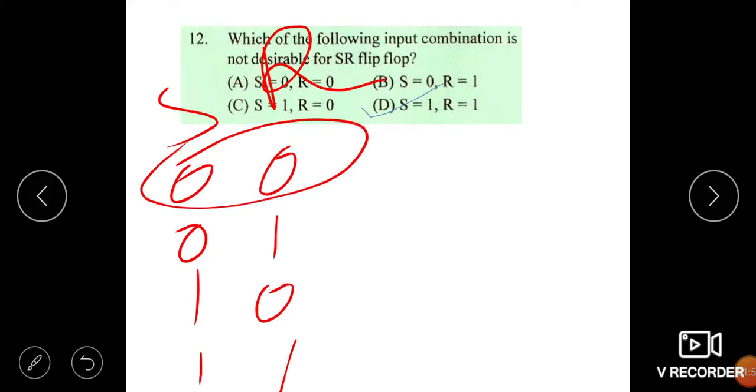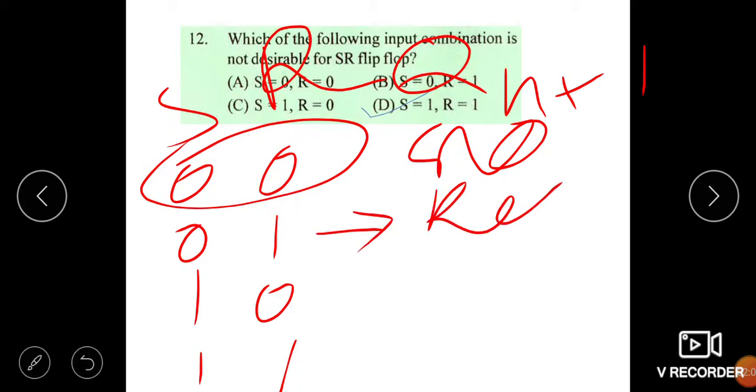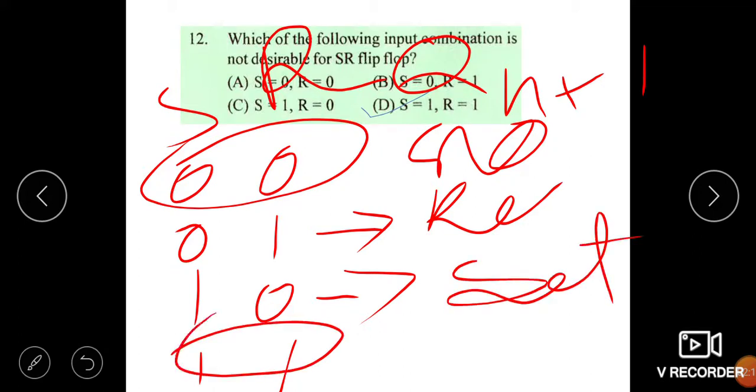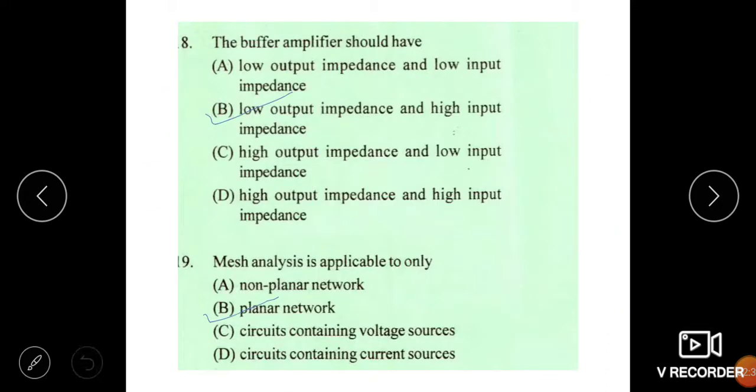When it is 00, in Q N plus 1 state, we get no output. When it is 01, it is reset. When it is 10, that is set. But when it is 11, it is undesirable situation. It may generate sometime 00 or sometime 11. So option D is correct. S equal to 1 and R equal to 1.